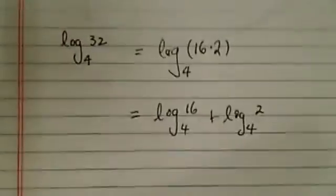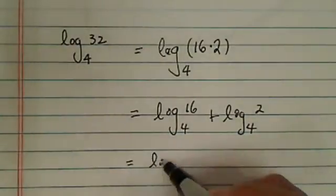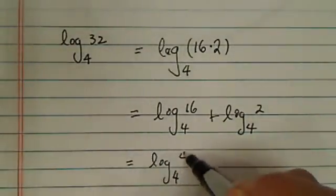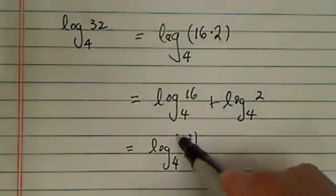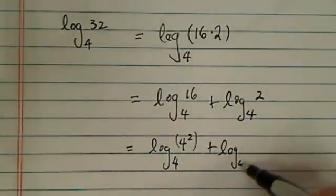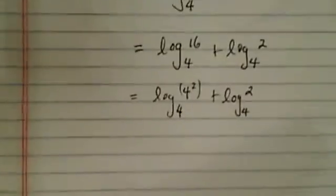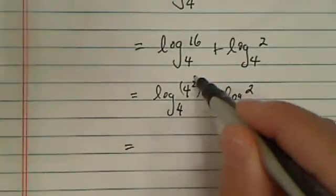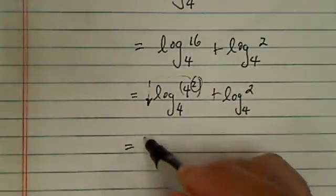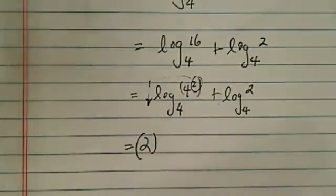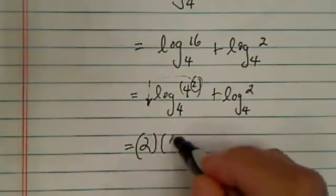16 is square of 4. So base 4, 4 squared plus log base 4 of 2. And then this one, this exponent is coming in front. I have 2, log base 4 of 4 becomes 1. So it's 2 times 1.